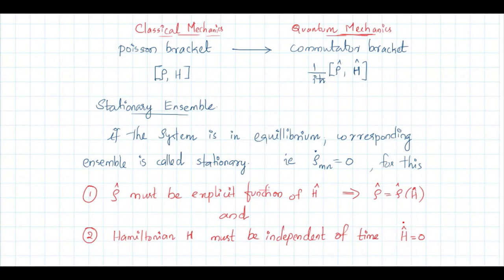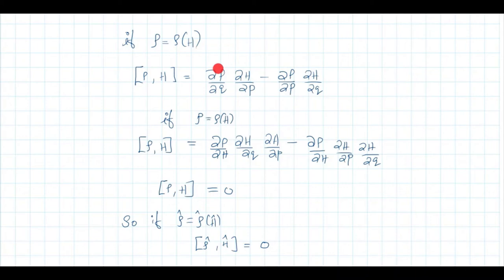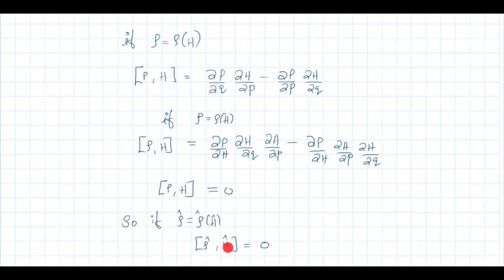If ρ̂ and Ĥ commute, the commutator bracket becomes zero and ρ̇ = 0. The condition for a stationary ensemble is [ρ̂, Ĥ] = 0, which holds when ρ̂ is a function of Ĥ. In the classical case, if ρ is a function of the Hamiltonian H, the Poisson bracket {ρ, H} = ∂ρ/∂q · ∂H/∂p − ∂ρ/∂p · ∂H/∂q = 0 because both terms cancel. The quantum mechanical analog is: if ρ̂ is a function of Ĥ, the commutator [ρ̂, Ĥ] = 0.